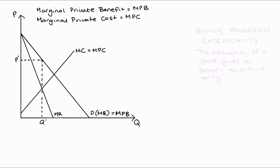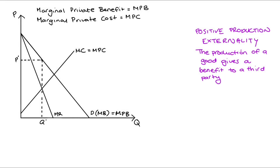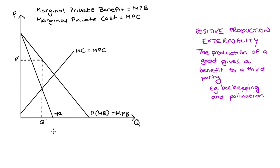So when we have a positive externality in production, it's the production of a good that gives some benefit to a third party. Just as an example, if I produce honey — so I keep bees — as a result of my beekeeping there's a nearby orchard of apples that gets pollinated by my bees, which means the trees bear more fruit than they would have otherwise. So there's a positive externality which is afforded to the owner of the orchard, who gets more fruit on account of my bees.